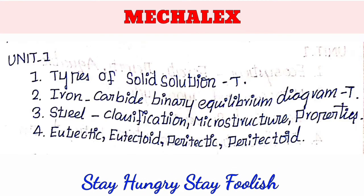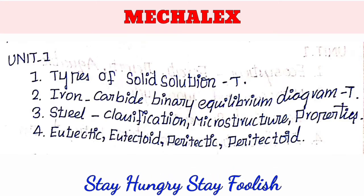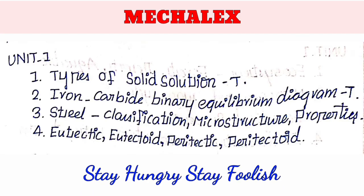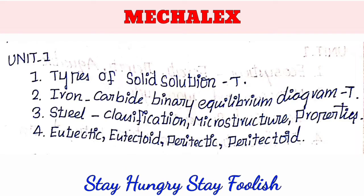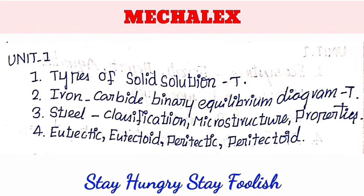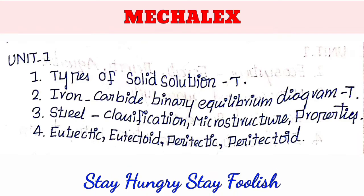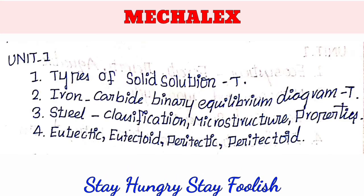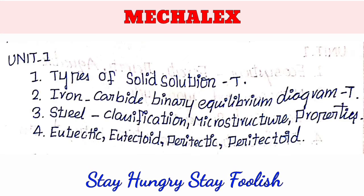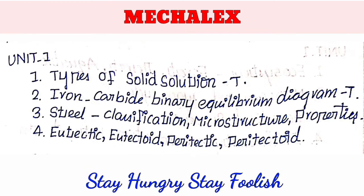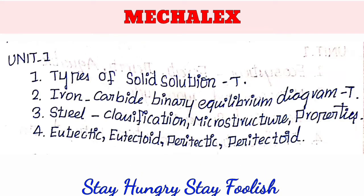The second most important topic is the Iron-Carbon binary equilibrium diagram. The most important thing about this diagram — there are lots of parts here. Let's look at the graph. We have to see the composition of each region.